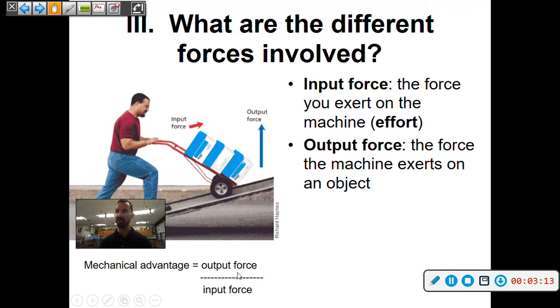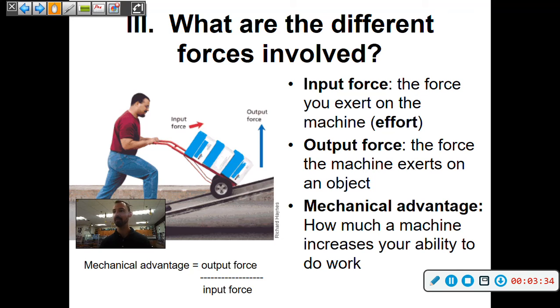The output force would be the force the machine exerts on the object. So in the case of these boxes of paper which are incredibly heavy, it will actually be able to overcome gravity and be able to move them. If you try to lift those alone, they would probably be too heavy to carry or pretty close to being too heavy to carry.